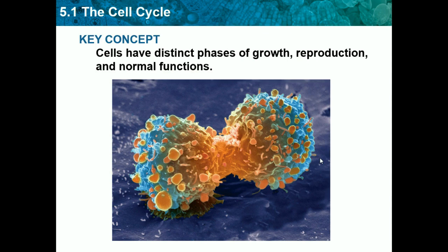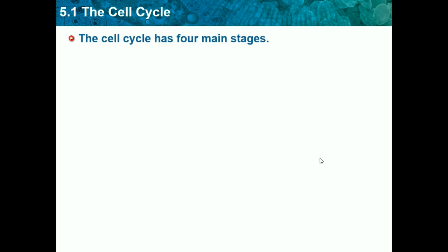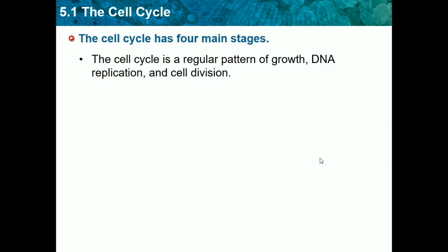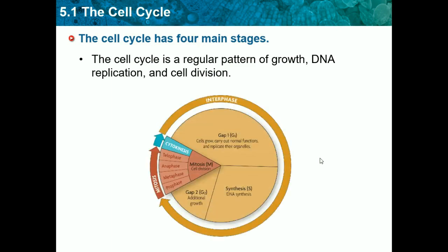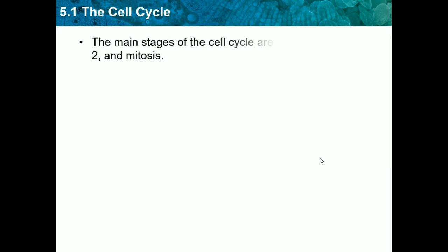Our key concept for today is: cells have distinct phases of growth, reproduction, and normal functions. The cell cycle has four main stages. Just like we have stages in our life, so does the cell. The cell cycle is a regular pattern of growth, DNA replication, and cell division. Here is our image of the cell cycle, and we'll be going over it in the next few slides.